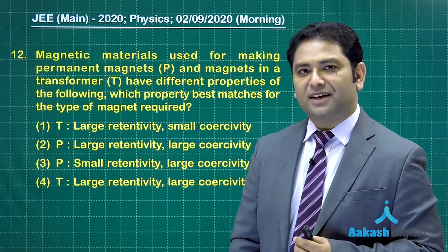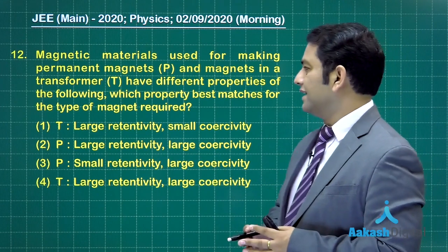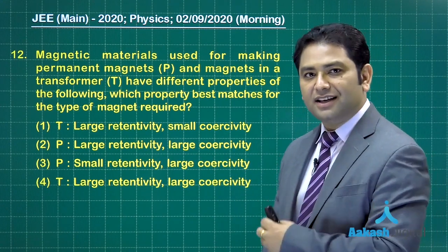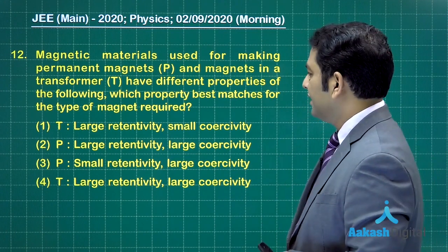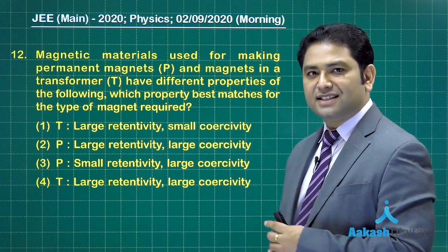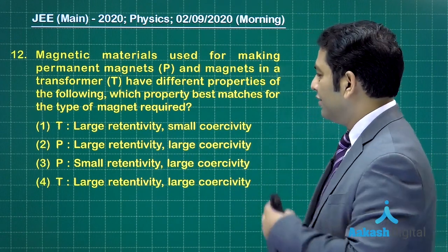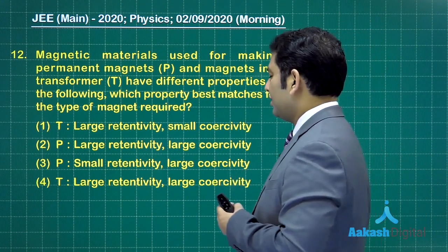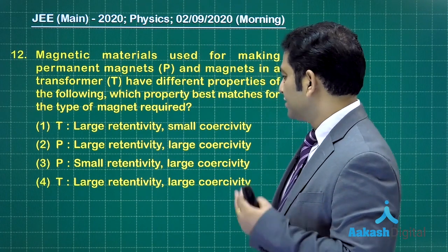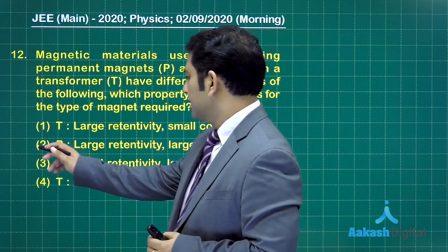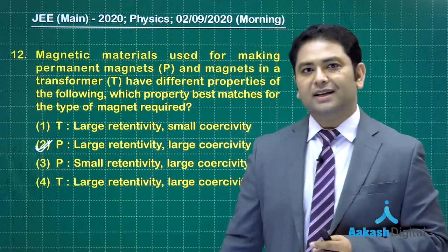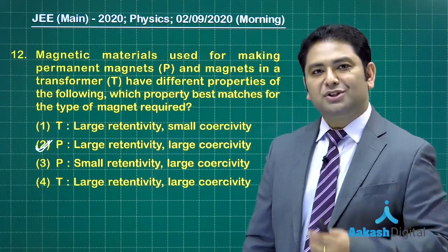Generally questions from these areas fall, so this information would be very vital for future aspirants. Basically there is a permanent magnet and there is a transformer, transformer means a temporary magnet. So the whole point is based on the parameters of hysteresis loop. Now for a permanent magnet you know it requires large retentivity and large coercivity, so option number two would be the correct one and the reverse would be there for a temporary magnet.